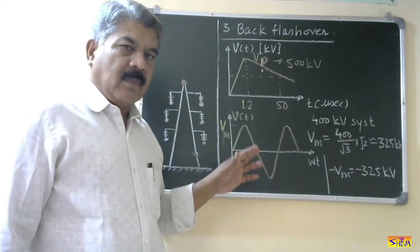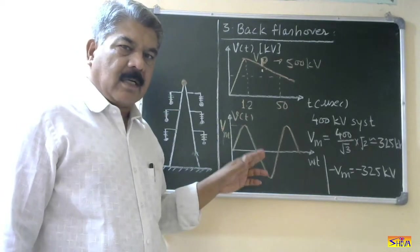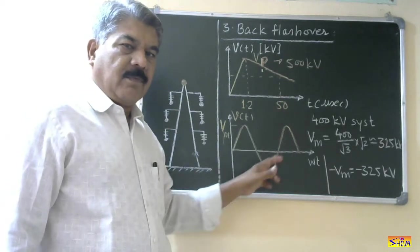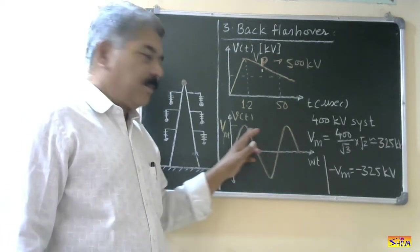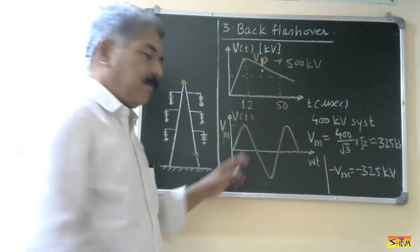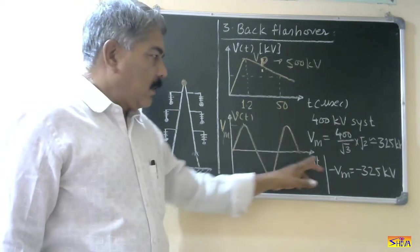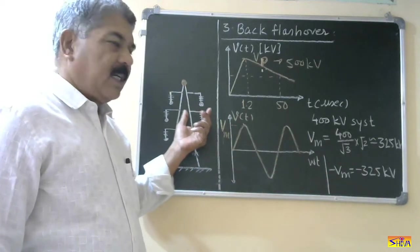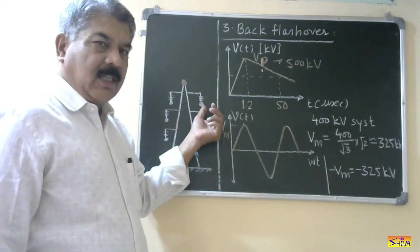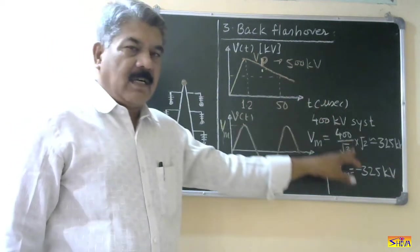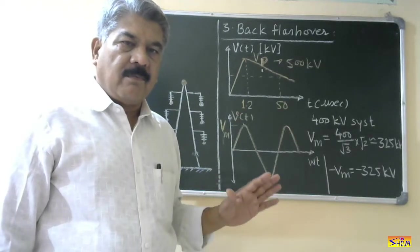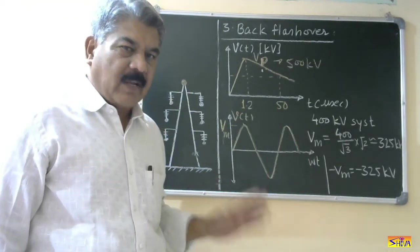Now suppose this overvoltage comes when this sinusoidal waveform or this power conductor is passing through this phase that is positive peak value. It is 325 kV. So relative voltage that is potential difference between this tower and this power conductor will be 500 minus 325 kV. That is only 175 kV. So no question of backflashover or any type of flashover.